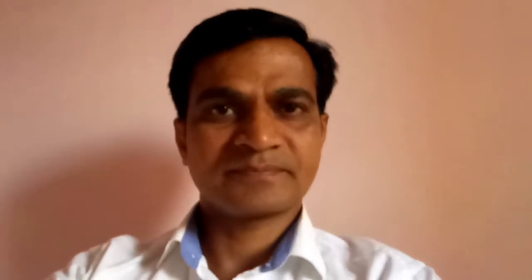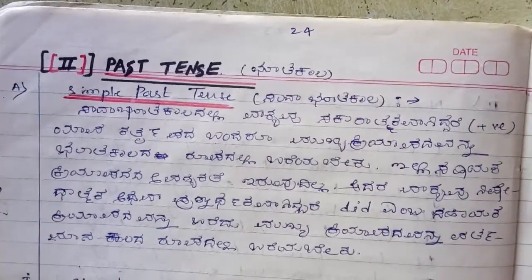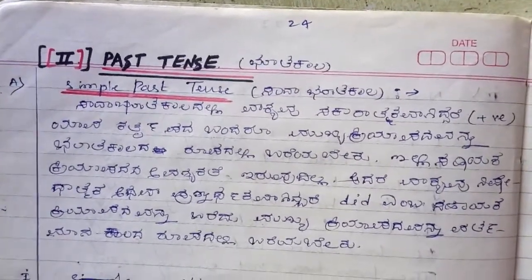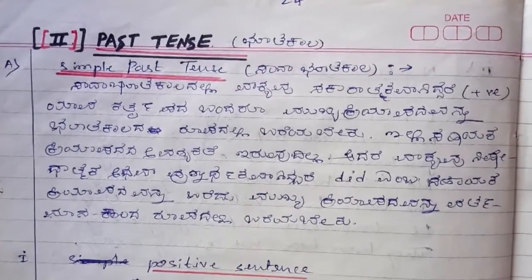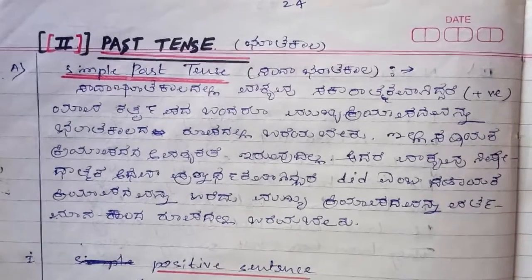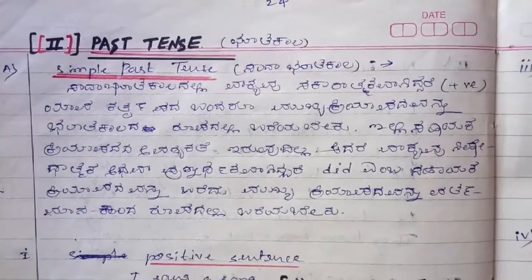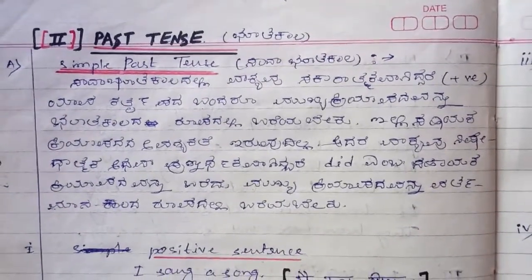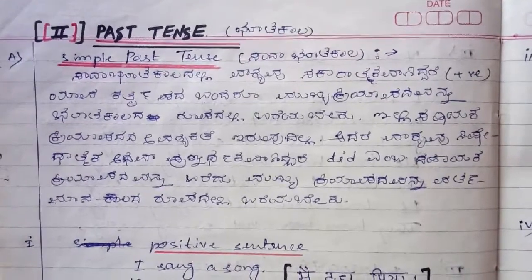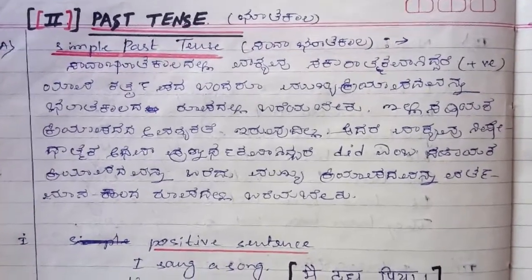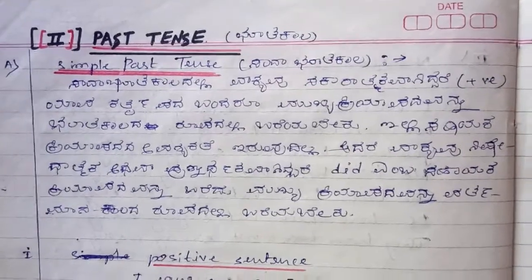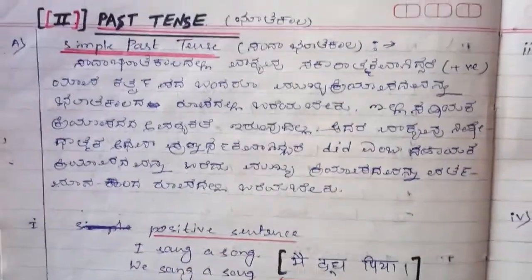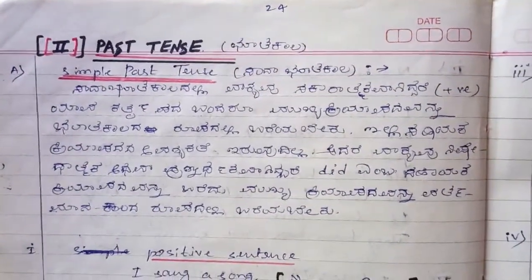Let's go for learning English grammar in English. We are going to learn past tense — simple past tense. Past tense means work that was already done previously: one minute back, two minutes back, half an hour, one day, two days, three days, one year back — whatever we have done previously, that we call past tense.